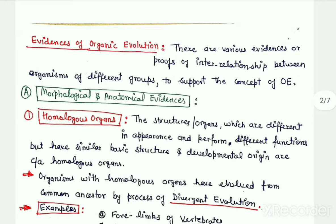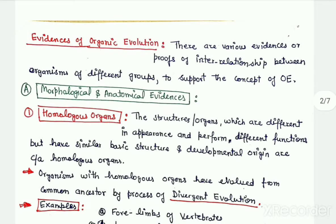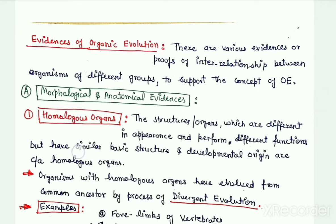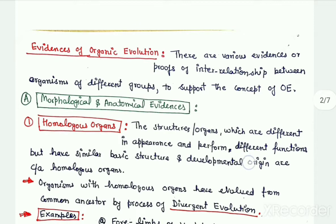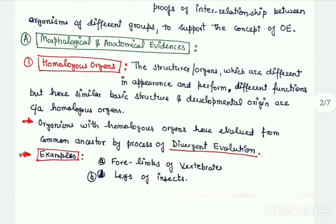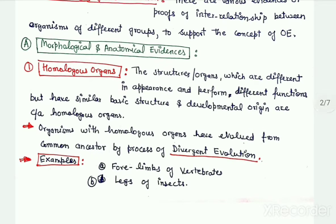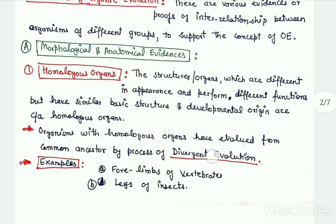The first type of evidence is homologous organs. Homologous organs are those organs or structures which may have different appearance and perform different functions, but they have similar basic structure and similar developmental origin. Their function can be different, but their basic appearance or developmental origin remains the same. Organisms with homologous organs have evolved from common ancestors, and that process of evolution is called divergent evolution.